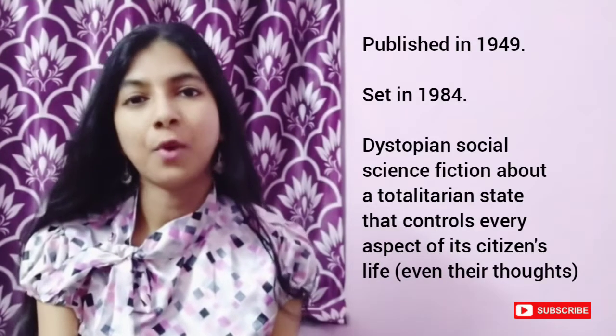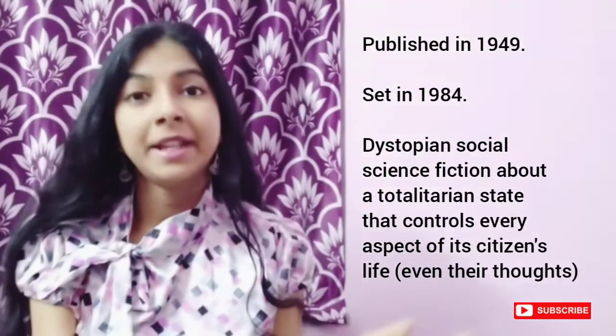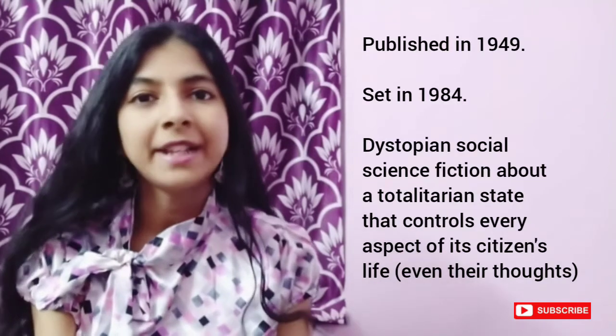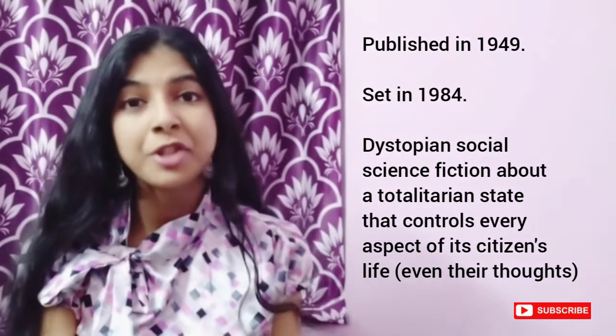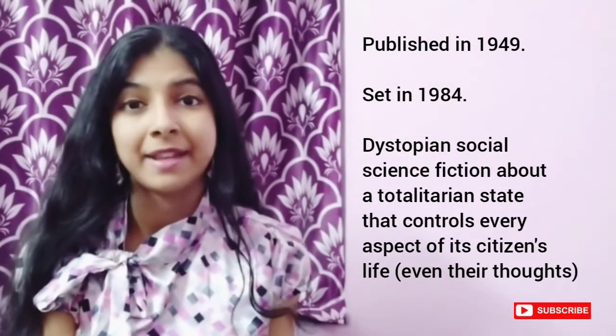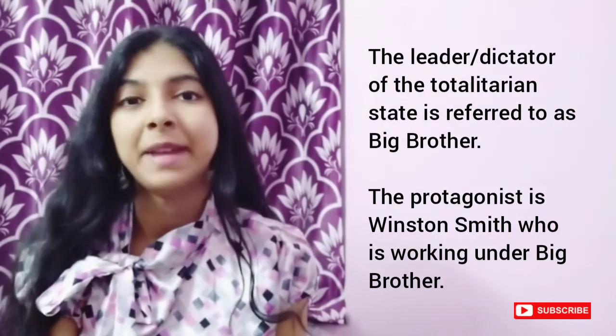First, we have 1984 by George Orwell. Although the novel was published in 1949, it was set in 1984. It is a dystopian social science fiction about a totalitarian state which controls every aspect of its citizens' personality, even their individual thoughts. The leader and dictator of the totalitarian state is referred to as the Big Brother.